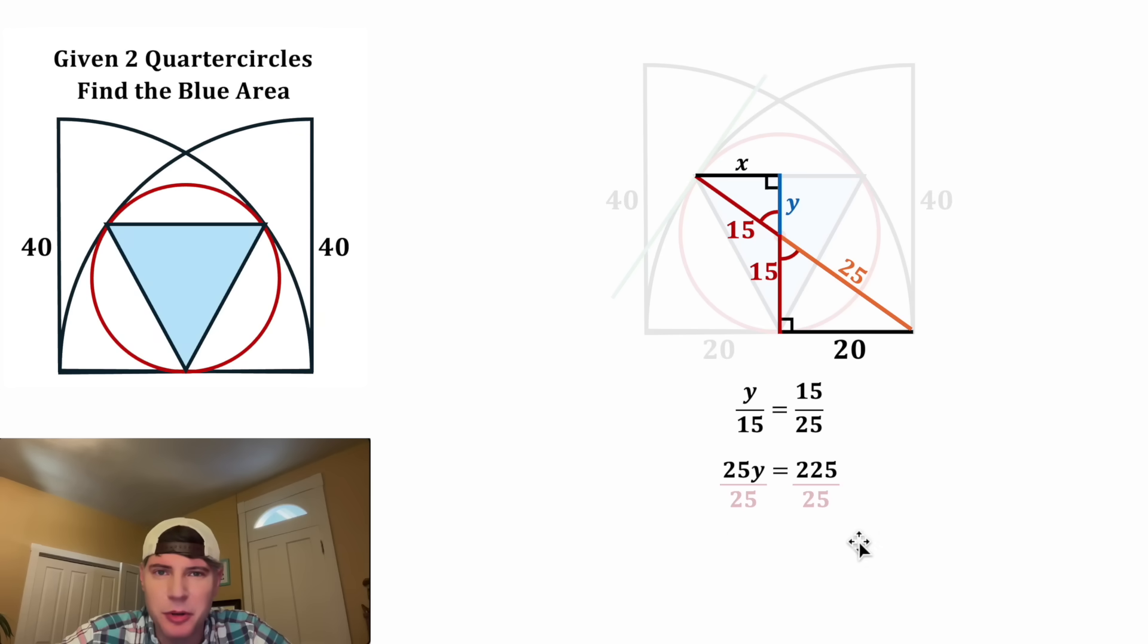From here, we can divide both sides by 25. And that'll leave us with Y is equal to 9. And then we can change this Y up here into a 9. And then from here, you might recognize this is a special 345 right triangle. So X is equal to 12.